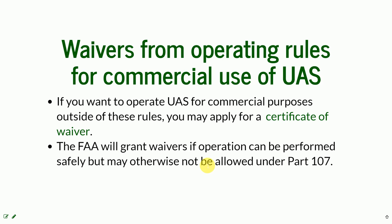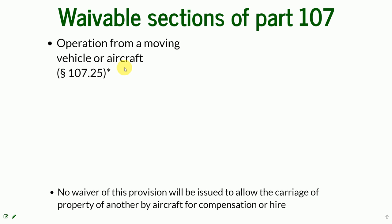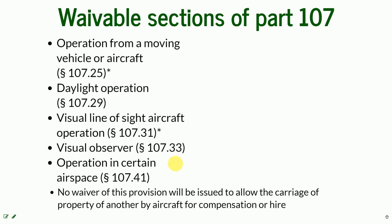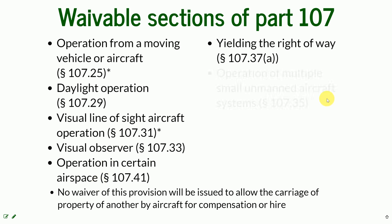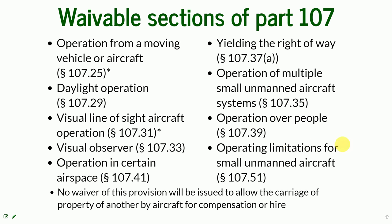The FAA will grant waivers for operations that can be performed safely but would otherwise not be allowed under Part 107. Only certain sections of Part 107 are waivable: operation from a moving vehicle, daylight operations, visual line-of-sight aircraft operations, the visual observer requirement, operation in certain airspace, yielding right-of-way, and operation of multiple small UAS systems — since the regular Part 107 rule is one pilot per UAS. There is also a waiver for operations over people and operating limitations for the aircraft itself.